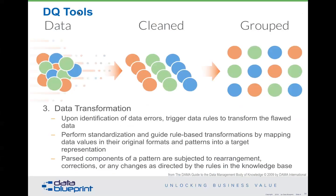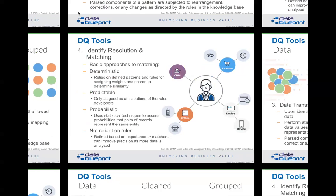The third category of data quality tools is data transformations. When you identify certain types of errors, this is really where machine learning is starting to dig in. A common example occurs in master and reference data: many people will put down Great Britain as the country known as the United Kingdom. The problem is GB may not be your official standard definition. A rule can pick that up and ask, did you mean Great Britain or did you want the proper ISO code, which is UK? These transformation tools look through various patterns, come up with rule-based transformations, and allow the organization to end up with higher quality data.